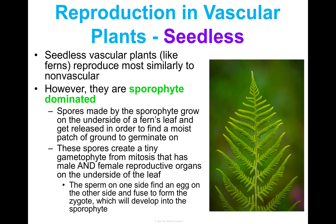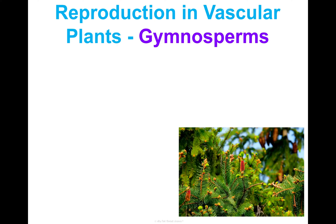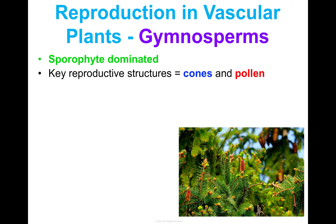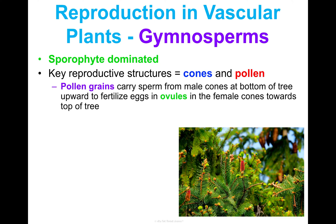Gymnosperms and angiosperms have reproduction that is a bit more differentiated and complex because they have seeds. Gymnosperms use cones and angiosperms use flowers. Gymnosperms are also sporophyte dominated. Their key reproductive structures are cones and pollen — pollen grains carry sperm from male cones at the bottom of a tree upward to fertilize eggs in ovules in the female cones, which are more towards the top of the tree.